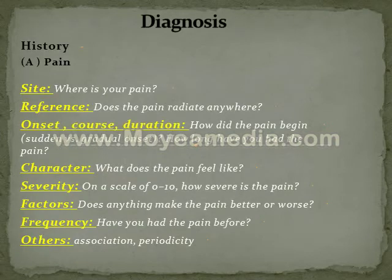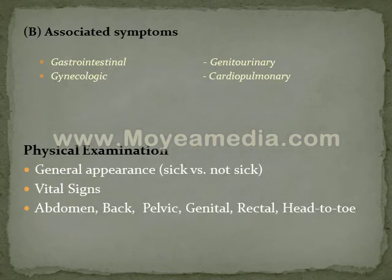Diagnosis of abdominal pain: a thorough clinical history and detailed physical examination should be taken. During history, we should ask about site, radiation, onset, course, duration, character, severity, factors that increase or decrease the pain, frequency, and associated symptoms. For physical examination, we stress on general appearance, vital signs, and examination of the abdomen, back, pelvis, genitals, rectum — a full head-to-toe examination.